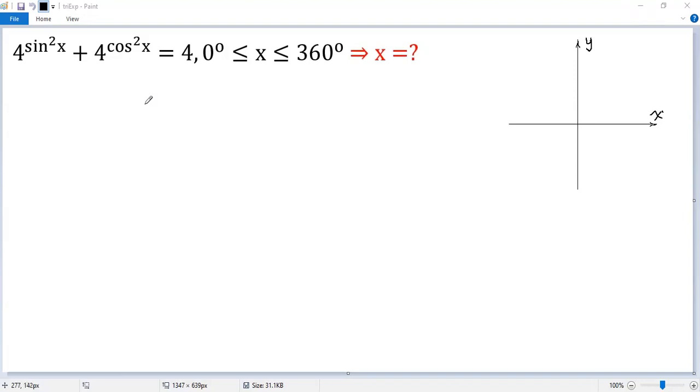We know sin²x equals 1 minus cos²x. So we get 4 to the power of 1 minus cos²x plus 4 to the power of cos²x equals 4. We can write the first term as 4 over 4 to the power of cos²x plus 4 to the power of cos²x equals 4.